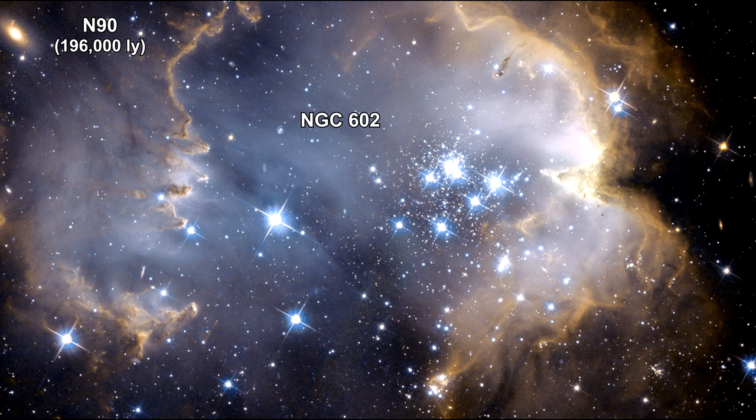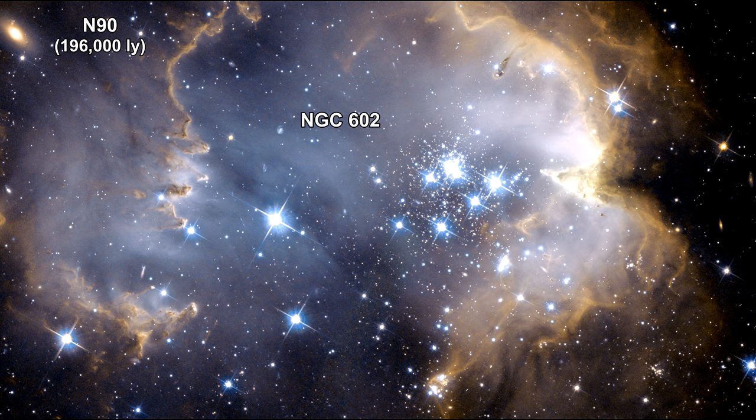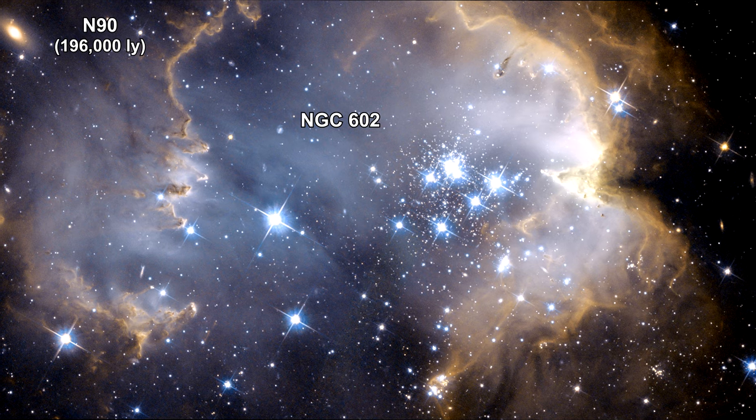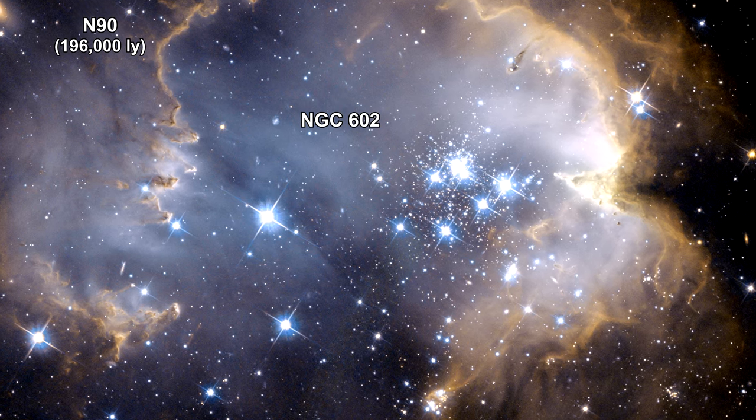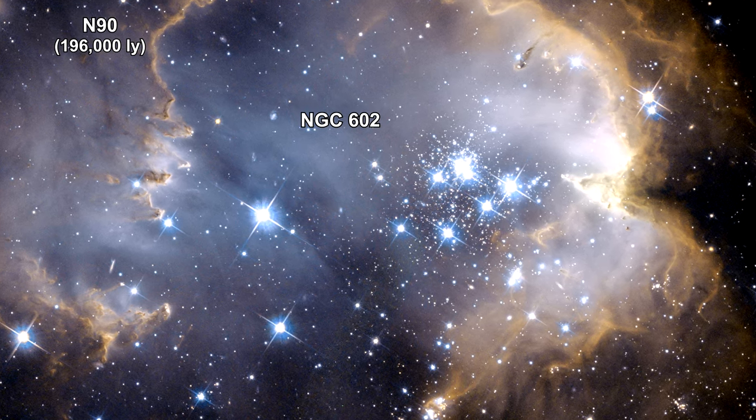NGC 602 is at the center of the Starbirth Emission Nebula N90 in the small Magellanic Cloud orbiting the Milky Way. Hubble detected over 5,600 stars.